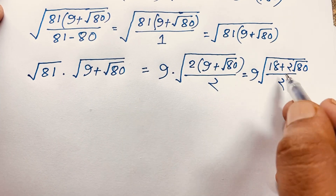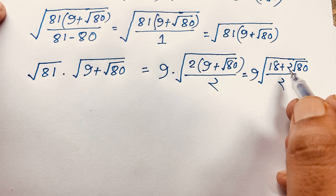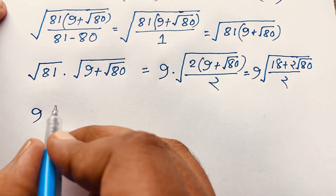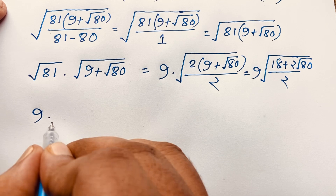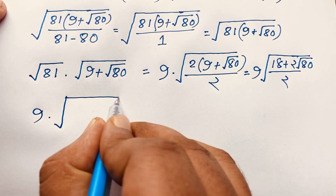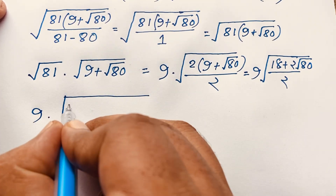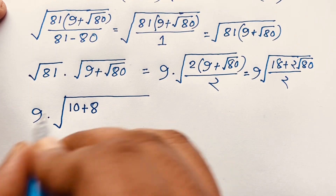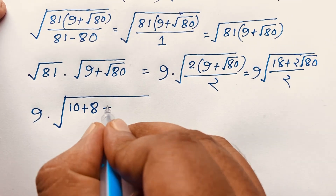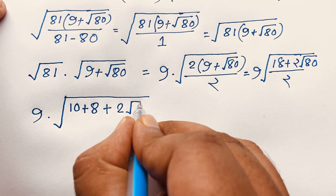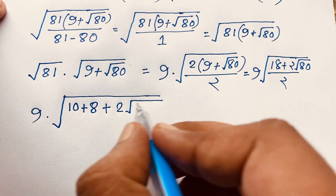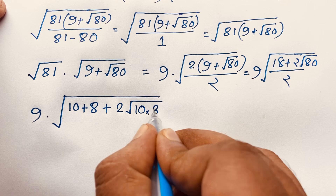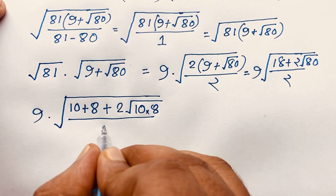Now if I evaluate this expression, you can see it will be 9 times square root of 18 — where 18 is 10 plus 8 — plus 2 times square root of 80, where 80 equals 10 times 8, all over 2.